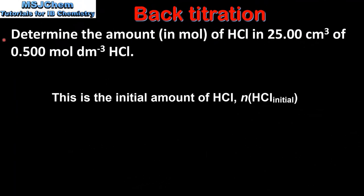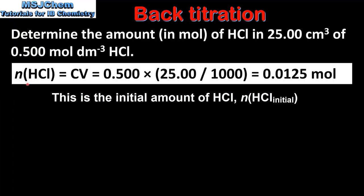The first step is to determine the amount in moles of hydrochloric acid in 25 cm³ of 0.5 mol per dm³ HCl. Using the equation n = CV, where n is amount in moles, C is concentration, and V is volume in dm³, we calculate 0.5 × (25 ÷ 1000), dividing by 1000 to convert from cm³ to dm³, giving us 0.0125 mol.